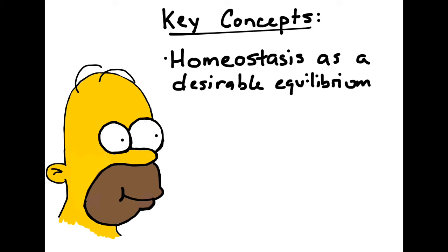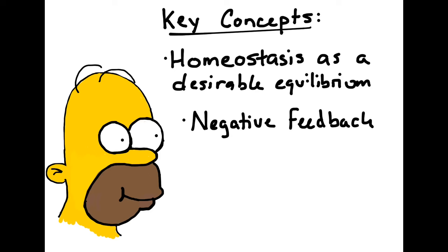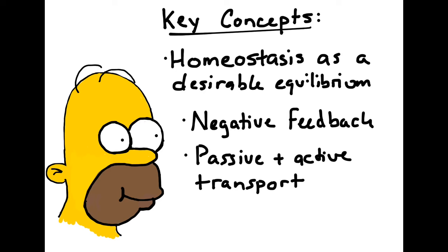A few key concepts to remember. First, homeostasis is a desirable state of equilibrium. Generally, maintaining homeostasis in biology also means maintaining ideal survival conditions. Most organisms use negative feedback loops to maintain this state of homeostasis. Finally, we also use passive and active transport in order to maintain this desirable state of equilibrium.